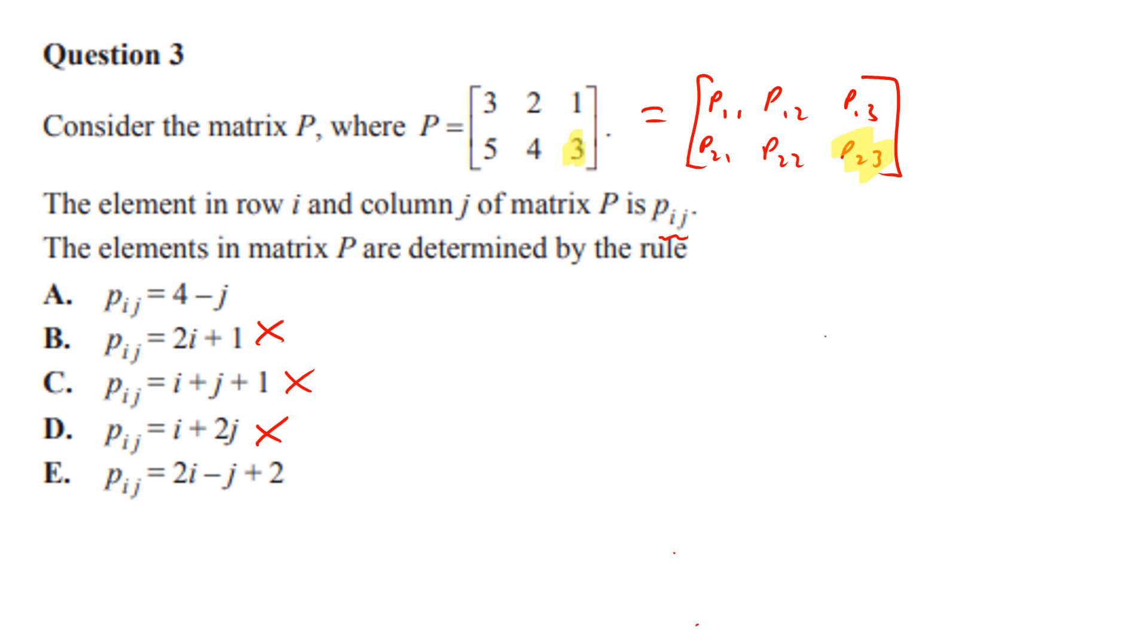You're a bit nervous in the exam, you want to double-check. Have a look at E. So 2 times 2 is 4, minus 3 is 1, plus 2 is 3. That did equal 3. The answer was in fact E. Off you go.